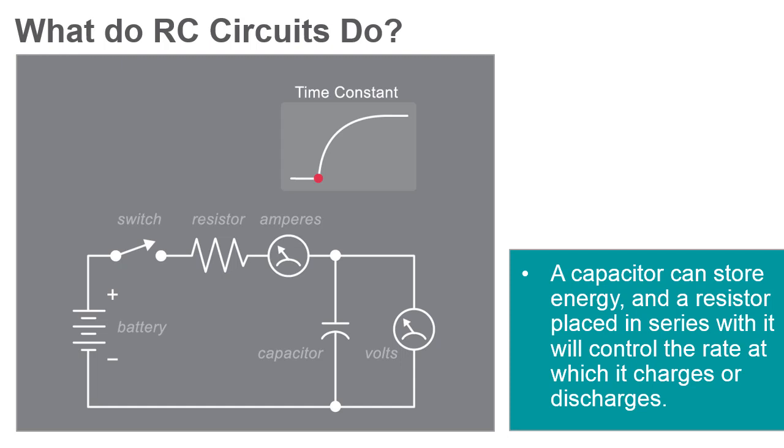When a circuit consists of a power supply, a resistor, and an uncharged capacitor, the capacitor will charge based on the current flowing through the resistor.